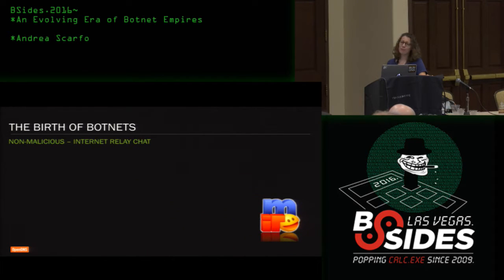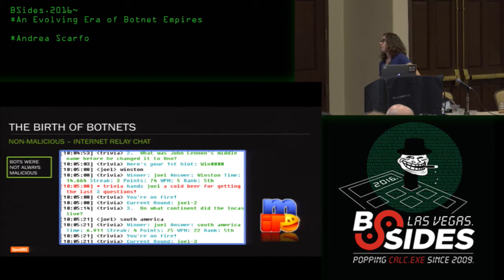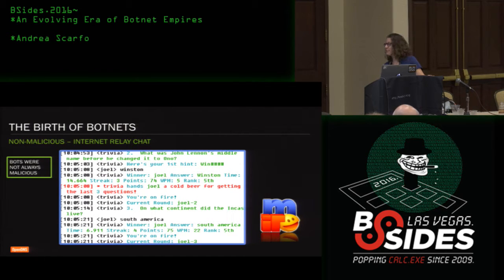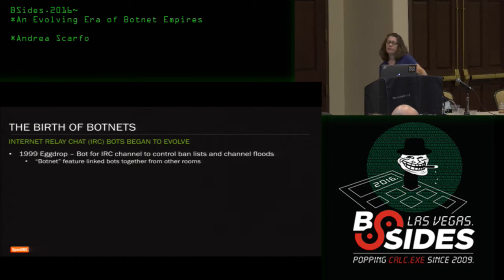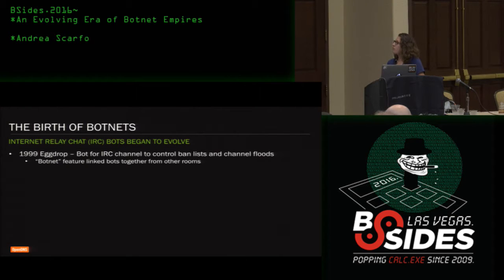Bots were not always malicious. They started out in IRC channels. Here's an example of a non-malicious bot that you could play a trivia game with in an IRC channel, and it would even serve you a cold beer. When bots first started moving around in IRC in 1999, a notable one is called Egg Drop, designed to control user ban lists and help prevent channel floods, and it had a feature called 'botnet' which linked bots together between rooms.